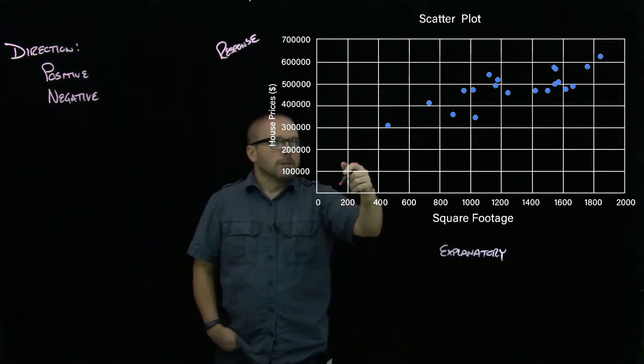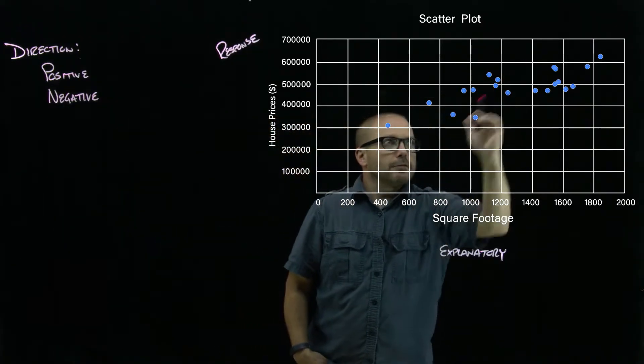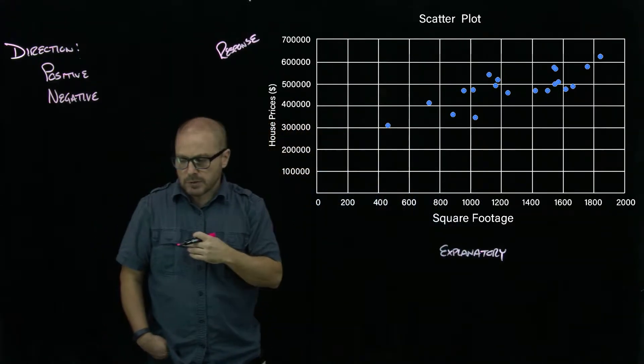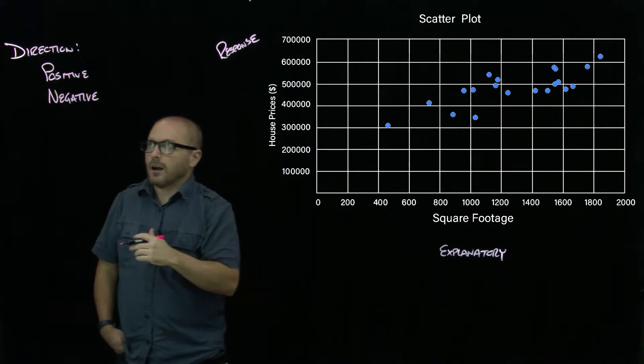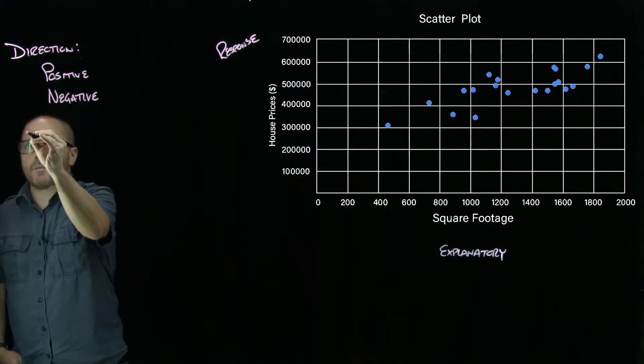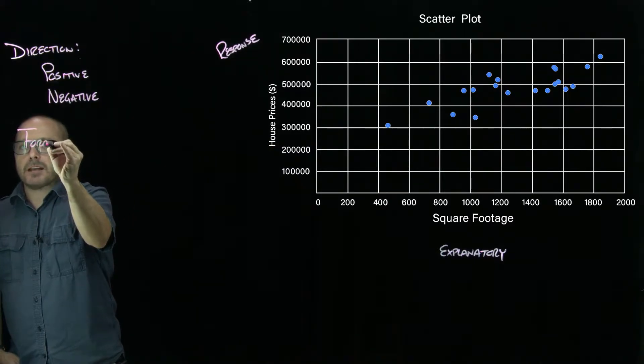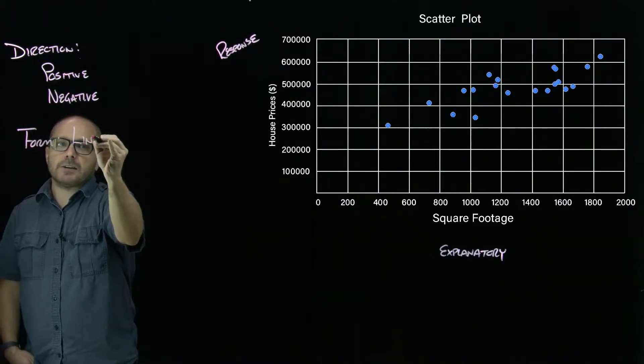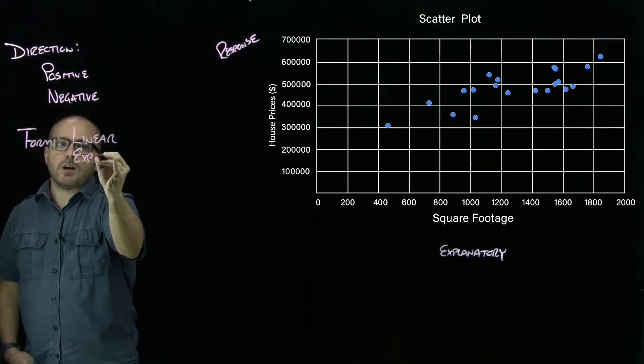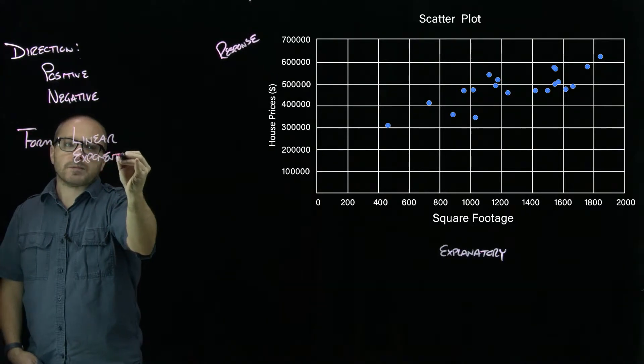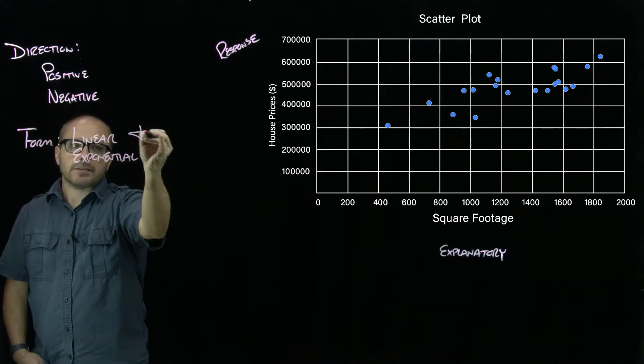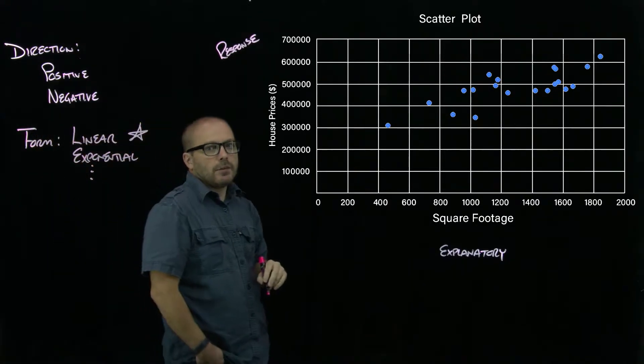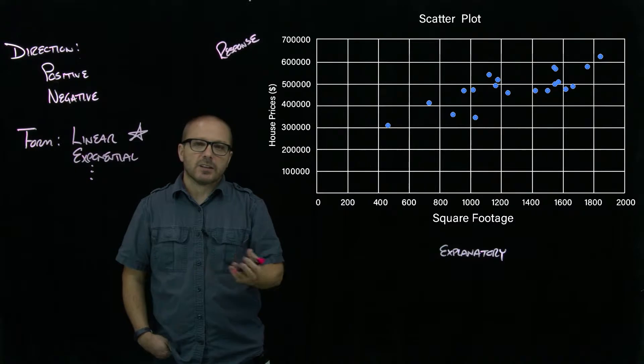This one is heading up as we read from left to right, so that one appears to be showing some positive relationship. As I mentioned, the form of the relationship—that's what I mean by what type of model it would fit—could be linear, could be exponential, all kinds of forms that could take on. But like I said, we're going to focus on a linear relationship.